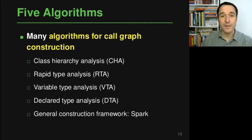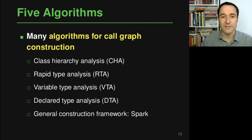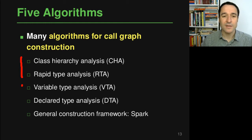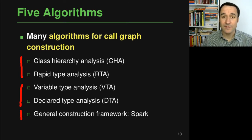In general, there are many different ways to construct a core graph in a static analysis. In this lecture, we focus on five algorithms that are relatively popular, going through them by increasing complexity — starting with the relatively simple ones called class hierarchy analysis and rapid type analysis here in this video, then variable type analysis and declared type analysis in the next video, and finally the Spark framework in video four, which is a generalization combining core graph analysis with points-to analysis.